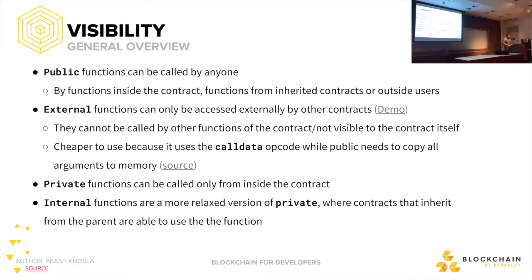Let's go over visibility. Public functions can be called by anybody — functions inside the contract, functions from inherited contracts, or outside users. External functions can be accessed externally by other contracts but cannot be called by other functions within the same contract and are cheaper to use because they use the calldata opcode, while public needs to copy memory. Private functions can only be called from inside the contract. Internal functions are like private functions but contracts that inherit from the parent contract can also use them, whereas private is restricted to that contract solely. The conclusion: keep your functions private or internal unless there is a need for outside interaction.